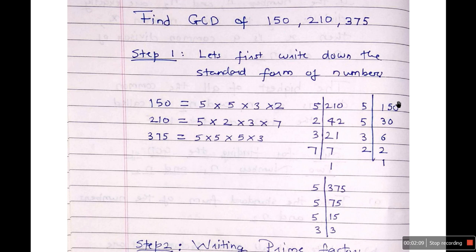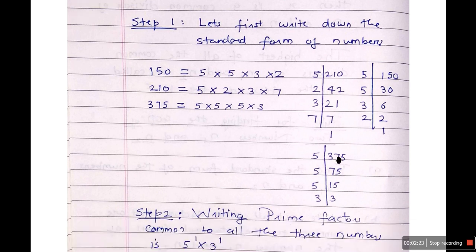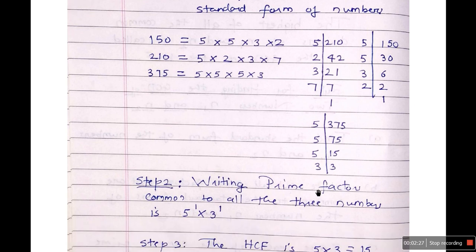Similarly, we find the standard form of 150: 150 ÷ 5 = 30; 30 ÷ 5 = 6; 6 ÷ 3 = 2; 2 ÷ 2 = 1. So the standard form of 150 is 5 × 5 × 3 × 2. And for 375, we get 5 × 5 × 5 × 3.